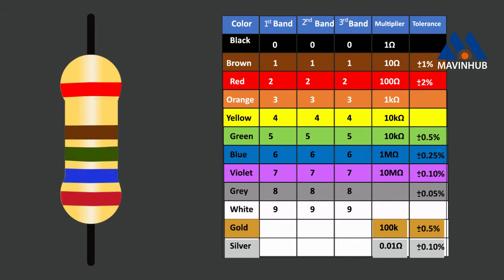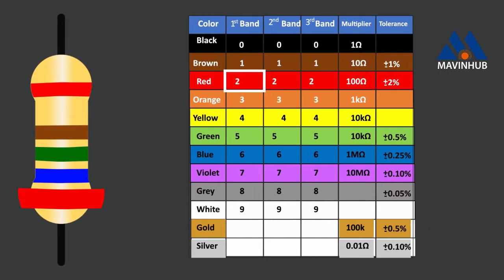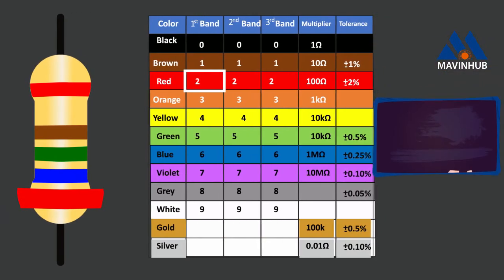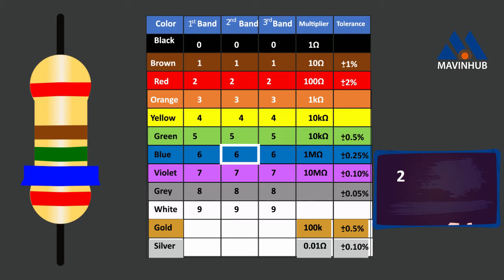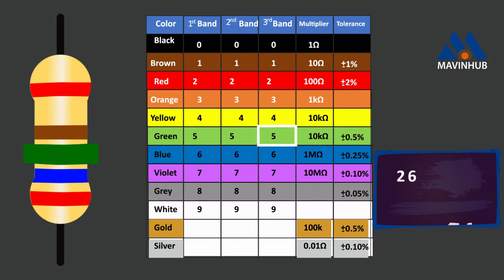In this example, the first band is red, so the first digit value is 2. The second band is blue, so the second digit value is 6. The third band is green, so the third digit value is 5.